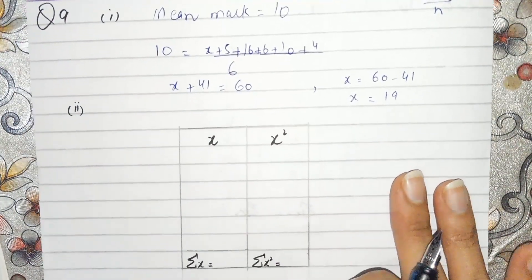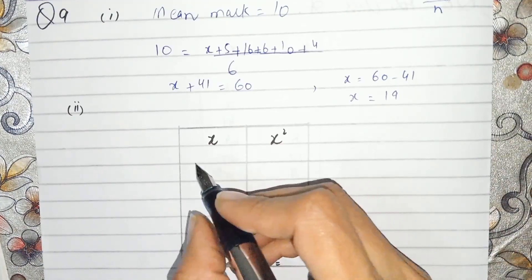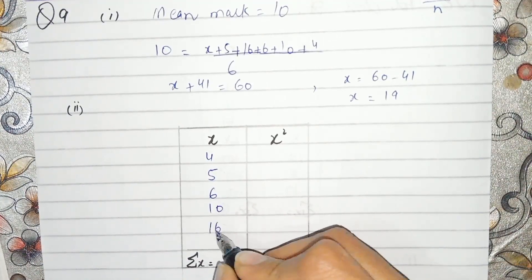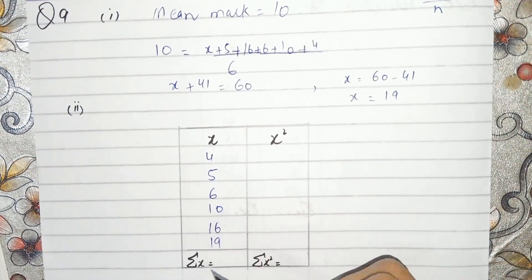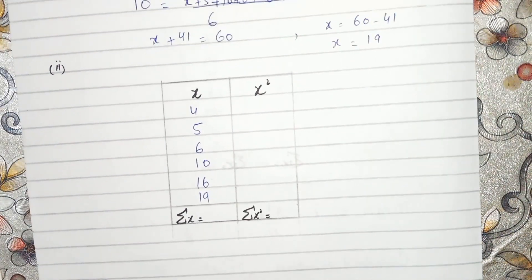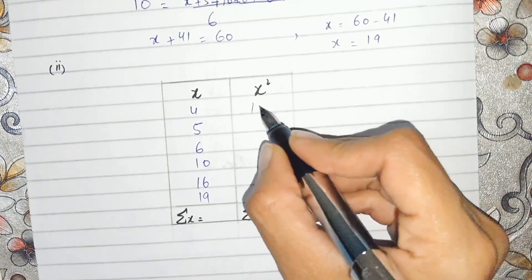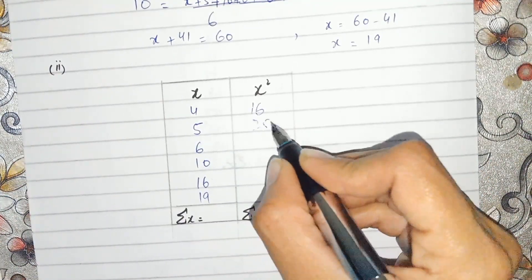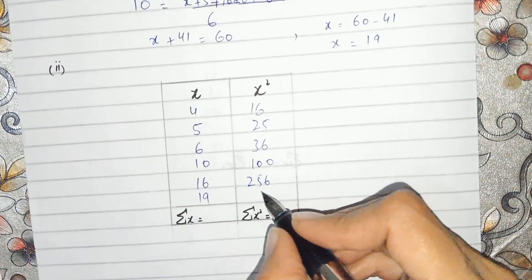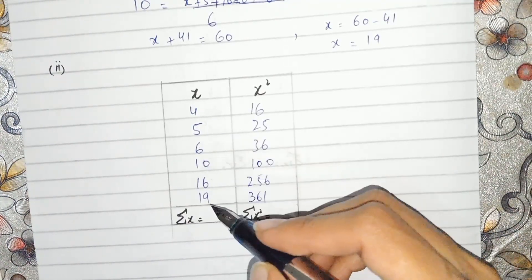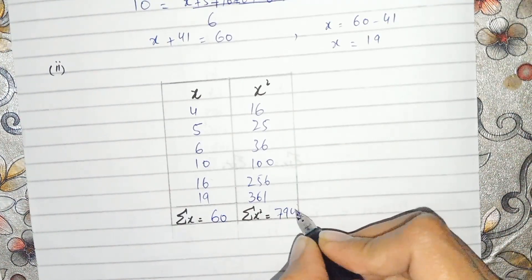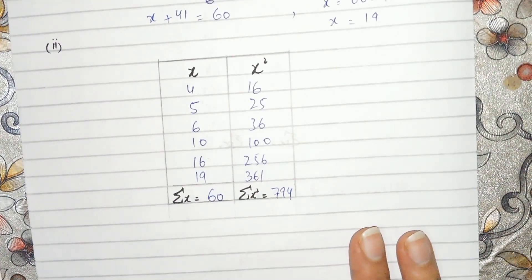For part 2, we list all six values in order: 4, 5, 6, 10, 16, and 19. Their squares are: 16, 25, 36, 100, 256, and 361. Adding the values gives sum of x = 60, and adding the squares gives sum of x² = 794.